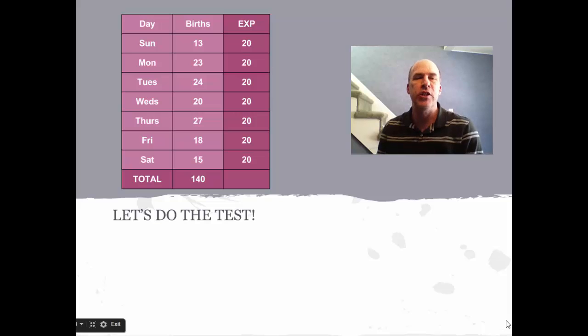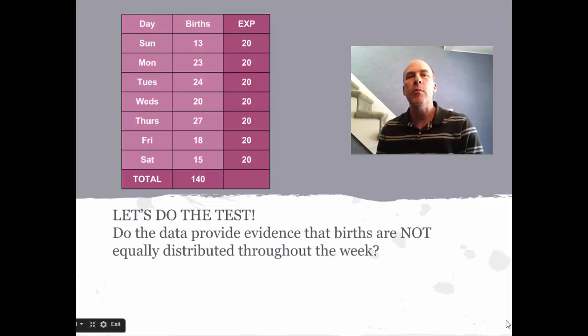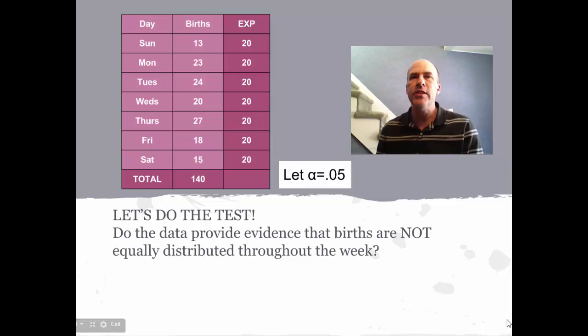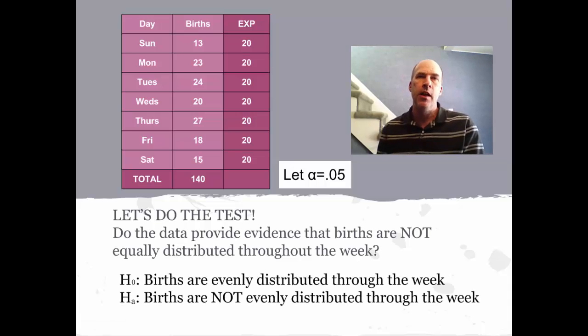Now we have enough information to actually do the test. Do the data provide convincing evidence that births are not equally distributed throughout the week? We are going to test this at the 5% level. One thing you're going to see that's different about chi-squared tests is that instead of using symbols for the null and alternate hypotheses, oftentimes it's easier to use narrative statements. The null hypothesis here would be that births are evenly distributed through the week. The alternate hypothesis is that births are not evenly distributed through the week.